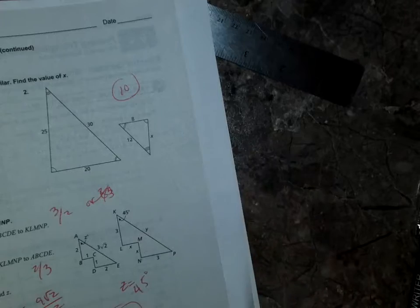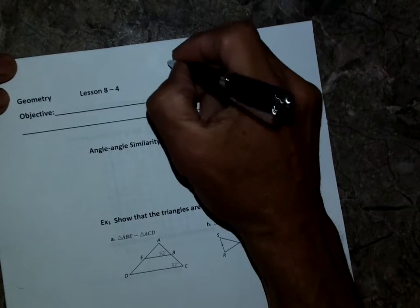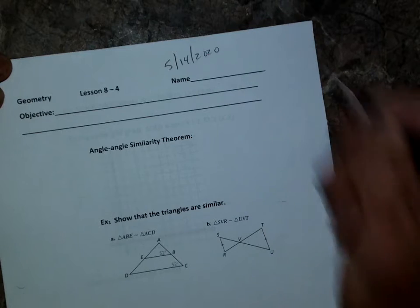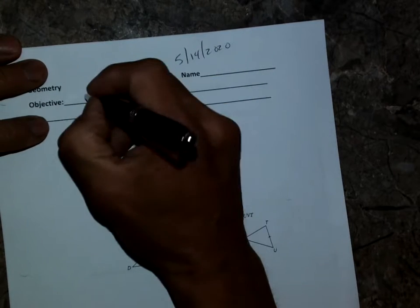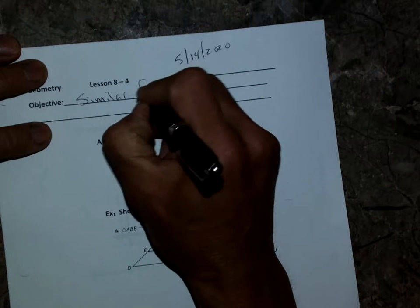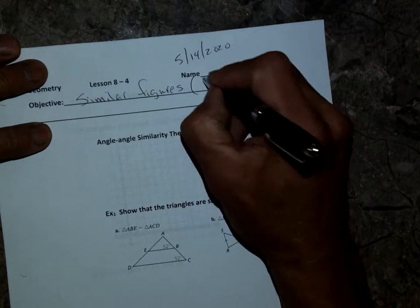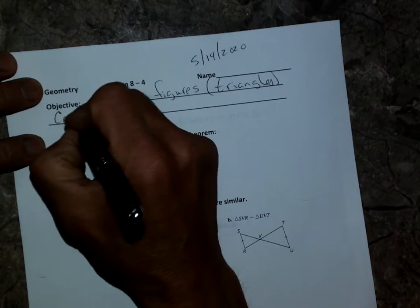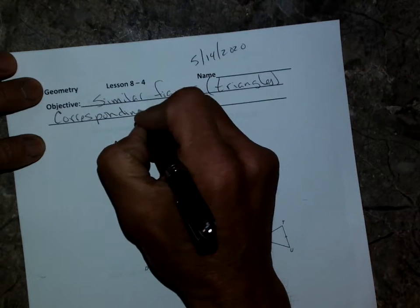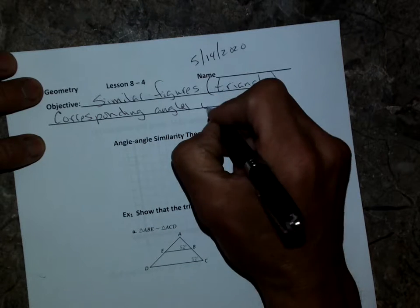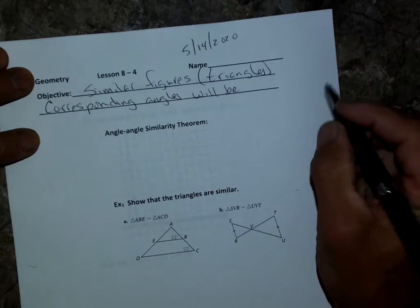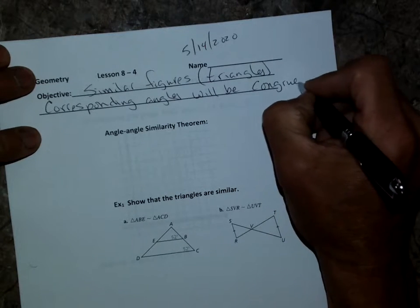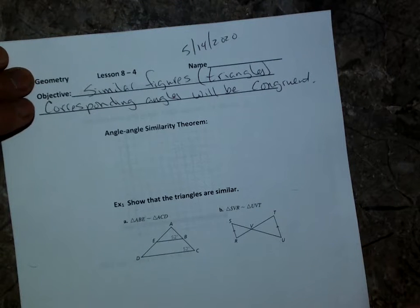Today's lesson — easy day. If two shapes are similar, they have the same shape. Today we're talking about similar figures, specifically triangles. Similar figures have the same shape, which means their corresponding angles will be congruent. Use the math word 'congruent' rather than 'equal' when talking about figures.